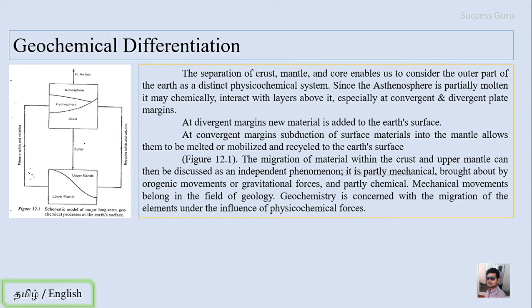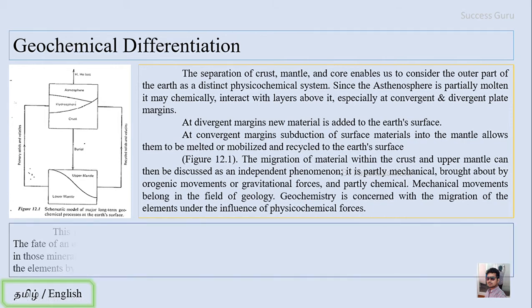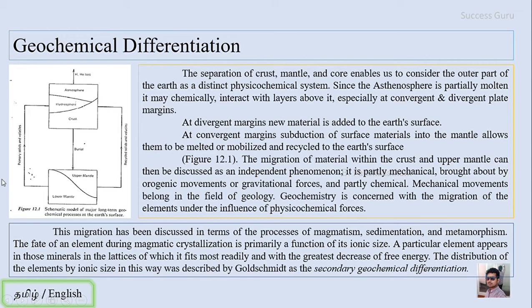And there are also some materials that are lost from the atmosphere, that is the hydrogen and helium ions that are lost from the exosphere. So this migration has been discussed in terms of processes of magmatism. Then there will be sedimentation process that will be acting within this region and the metamorphism.